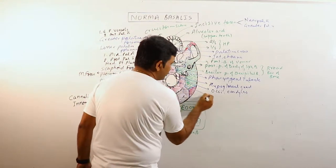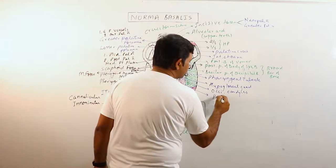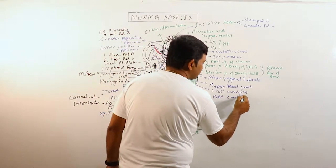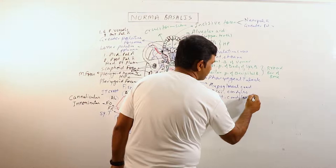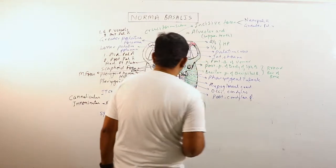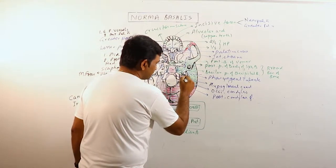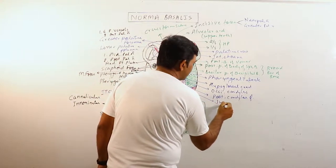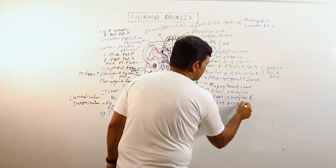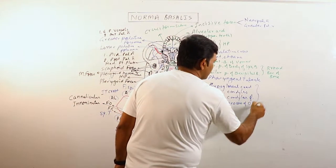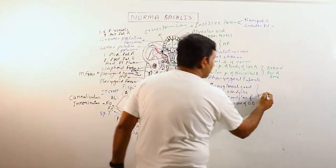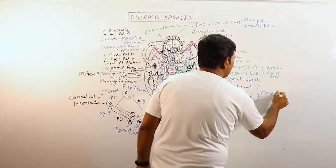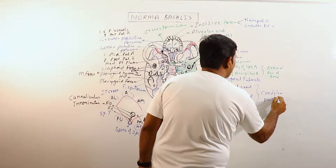There is another foramen here. This is the posterior condylar foramen. And this region, this is the jugular process of occipital bone. These all four structures form the condylar part of occipital bone.